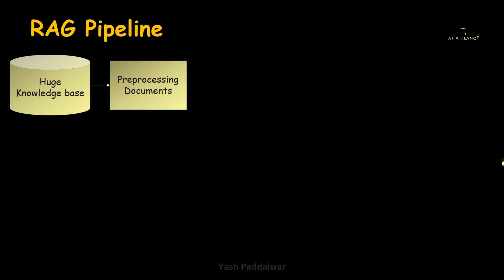This chunking process increases efficiency — it makes retrieval faster as well as it makes the search results better. Because as we already have seen in the previous video, we use vector search methodology. So instead of creating a vector of the entire document, if we create vectors of small-sized chunks of that particular document, the vector search will be faster as well as more precise and accurate. That is why this pre-processing step is very important. Here we load the documents into a particular format, then we divide them into chunks.